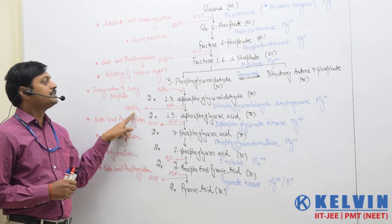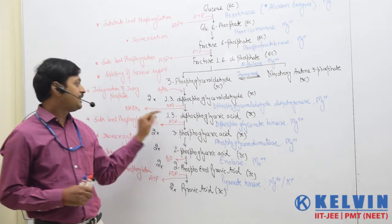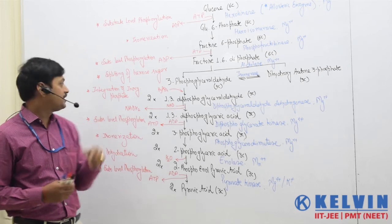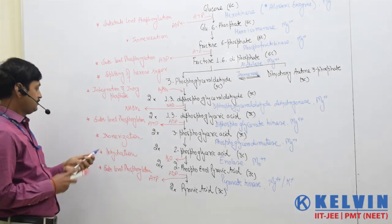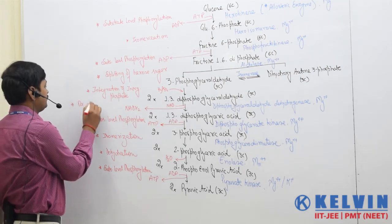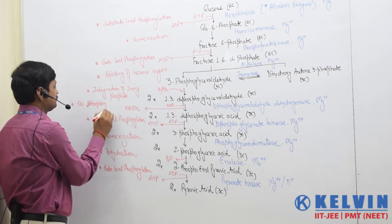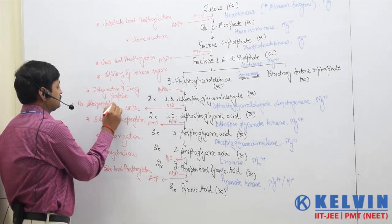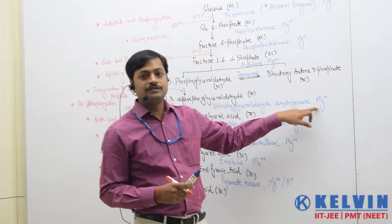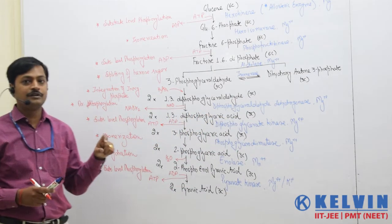Two molecules of NADH₂ are formed from the step converting 3-phosphoglycerate to 1,3-diphosphoglyceric acid. That step is oxidative phosphorylation — or more precisely, oxidative dehydrogenation — because the enzyme involved is a dehydrogenase. Both terms can be used.